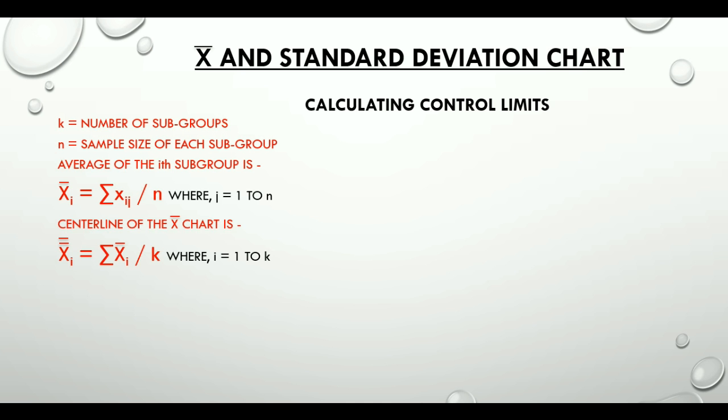To understand it better, let's visualize that we have five subgroups. Each subgroup has its own average. In X-bar chart, average of these five subgroup averages will be designated as X-double-bar. So X-double-bar equals the summation of X̄ᵢ divided by k, the number of subgroups, where i takes values from 1 to k.